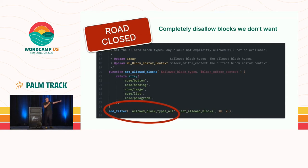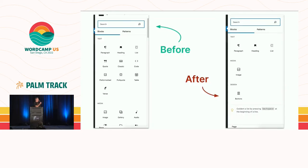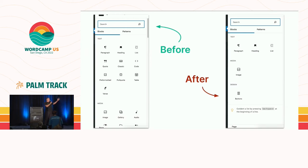First, we can use — this is in PHP, probably in a functions file or a plugin — the `allowed_block_types_all` filter. We're essentially setting the allowed blocks we want: button, heading, image, list, and paragraph. That's it. So when we go in to edit a page, instead of a small scrollbar with a lot of options, we've narrowed it down to just the ones used on this site, with no extra distraction.